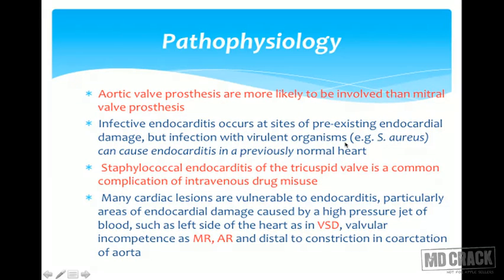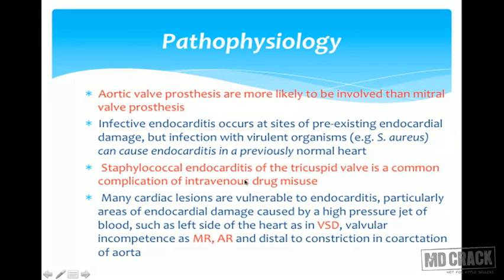Infective endocarditis occurs at sites of pre-existing endocardial damage, but infection with virulent or aggressive organisms like Staphylococcus aureus can cause endocarditis in a previously normal heart. Staphylococcal endocarditis of the tricuspid valve is a common complication of intravenous drug misuse — an important point to take note of.